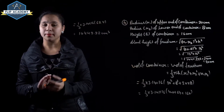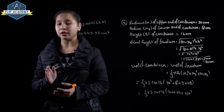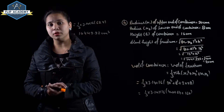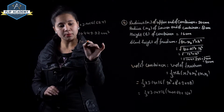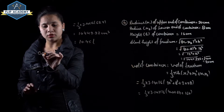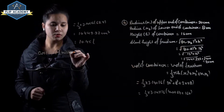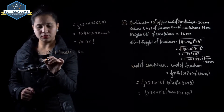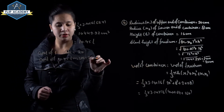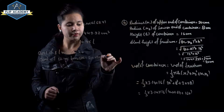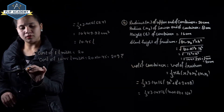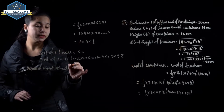Volume of the container, or capacity of frustum, is equal to 10,449.92 centimeter cube. Converting to litres gives 10.45 litre. Cost of 1 litre milk equals 20 rupees, so cost of 10.45 litre milk equals 20 into 10.45, equal to 209 rupees.